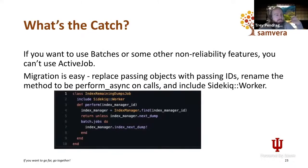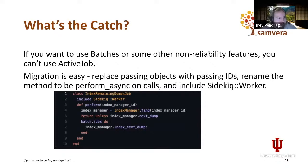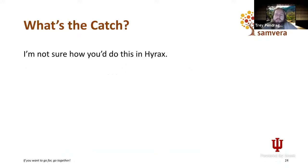So what's the catch? The catch is if you want to use batches, you don't get to use Active Job — it's a pretty big catch. If you have your own repository, migrating is actually super easy: just get rid of the inheritance, include SidekiqWorker, your method is named the same thing, and make sure you're passing basic arguments — mostly strings — as arguments, not Ruby objects. If you have a Valkyrie application, you're probably already doing that. The other thing is I'm not sure how you'd do this in Hyrax — not everybody's going to pay for Sidekiq Pro, and you can't use Active Job. I don't have a great solution. I'm really sorry.